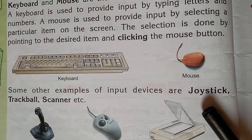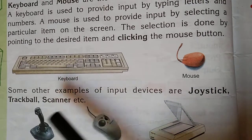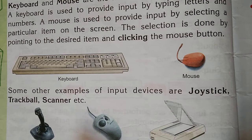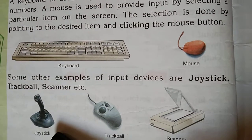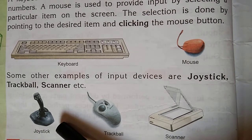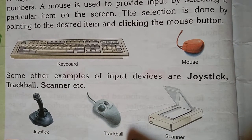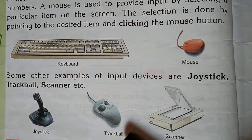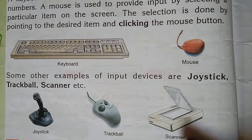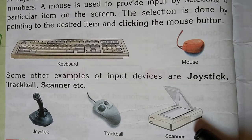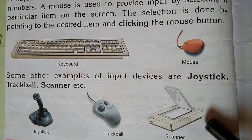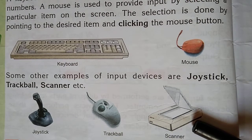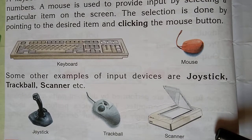Some other examples of input devices are joystick, trackball, and scanner. These are also input devices but they are not required for every computer. Joystick is used to play video games — it is attached to the computer. Trackball looks like and functions like a mouse; it is basically an upside-down mouse. Scanner is used to input picture data — for example, to scan a book page.